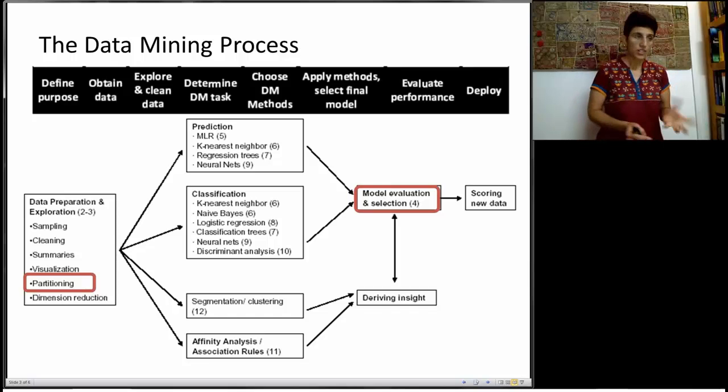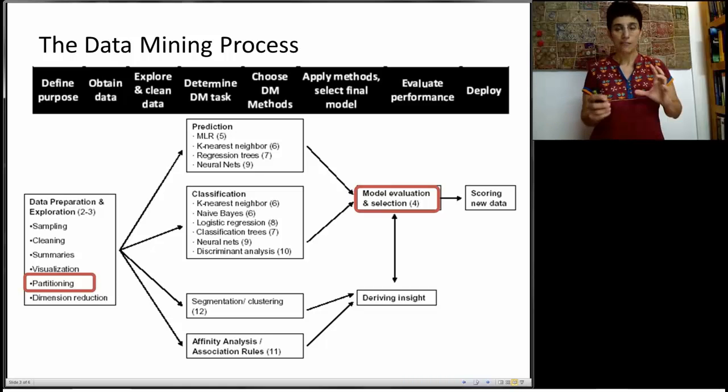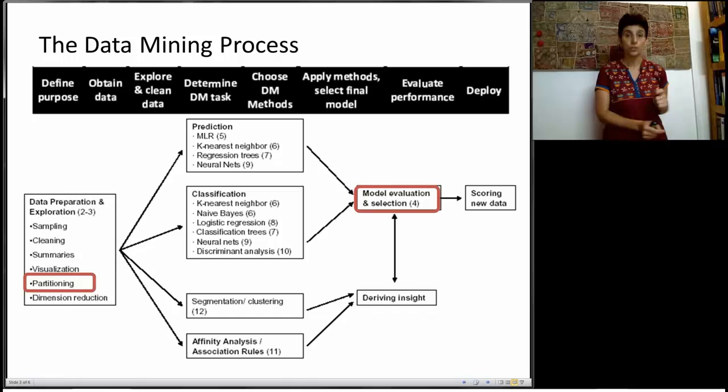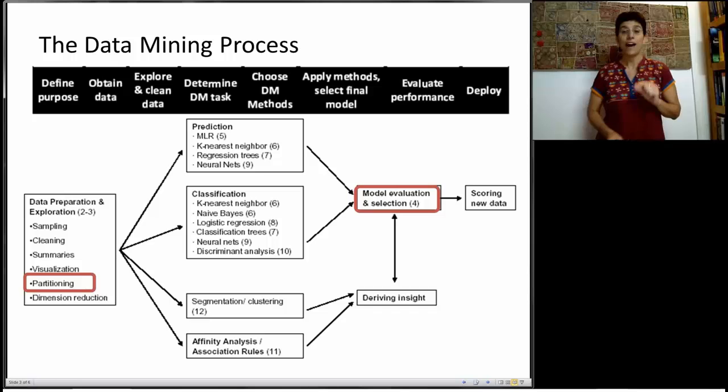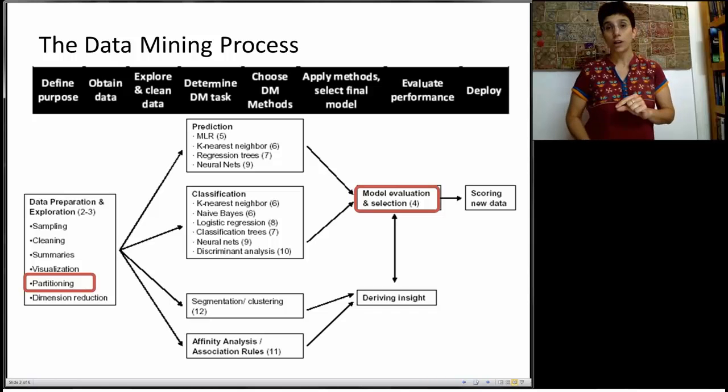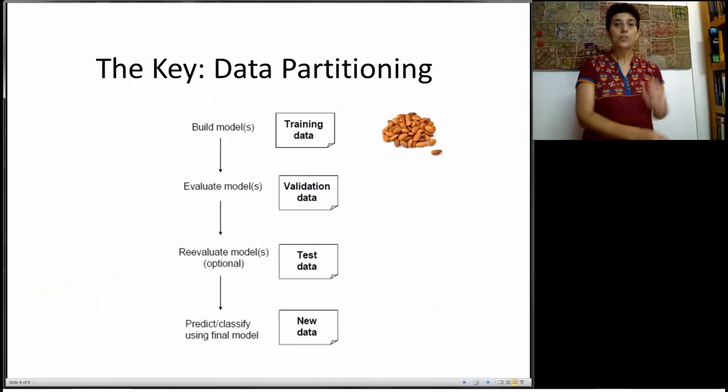At that step, we're going to take a subset of the data and lock it up in a drawer and not open it until we're done with all the modeling. When we're totally finished with the modeling stage, and we have a final model that we're planning to use, we're going to open that secret drawer and try to apply our model to these data that the model has never seen. That will give us an idea of how well our model will work when we deploy to new data in the deployment stage.